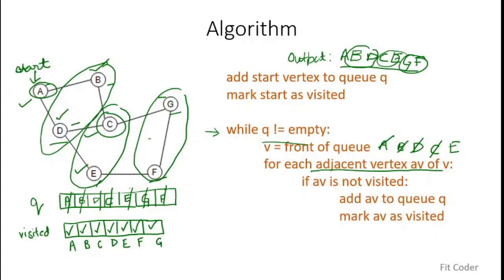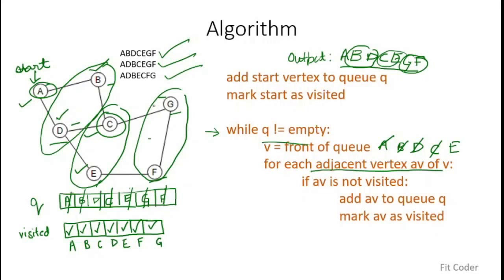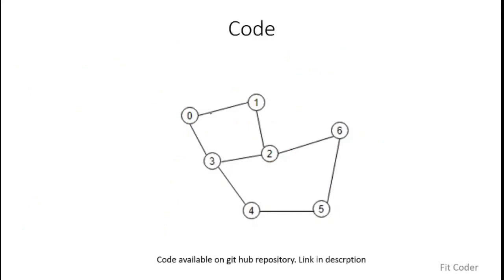Note that since D and B are equidistant from A, if we enqueue D before B the order will differ slightly. There can be multiple valid BFS traversals of the same graph. For example: A B D C E F G, or A D B E C G F, and other variations depending on the order neighbors are processed. However, in all cases nodes at equal distance from the start are always explored before nodes that are farther away — that is the core essence of BFS.